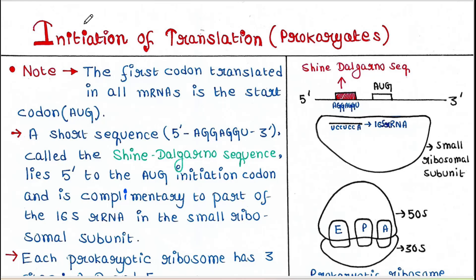The first codon translated in all mRNAs is the start codon, AUG, and it is the same in prokaryotes as well as eukaryotes. A special sequence is present upstream of the start codon. Upstream means before the start codon.